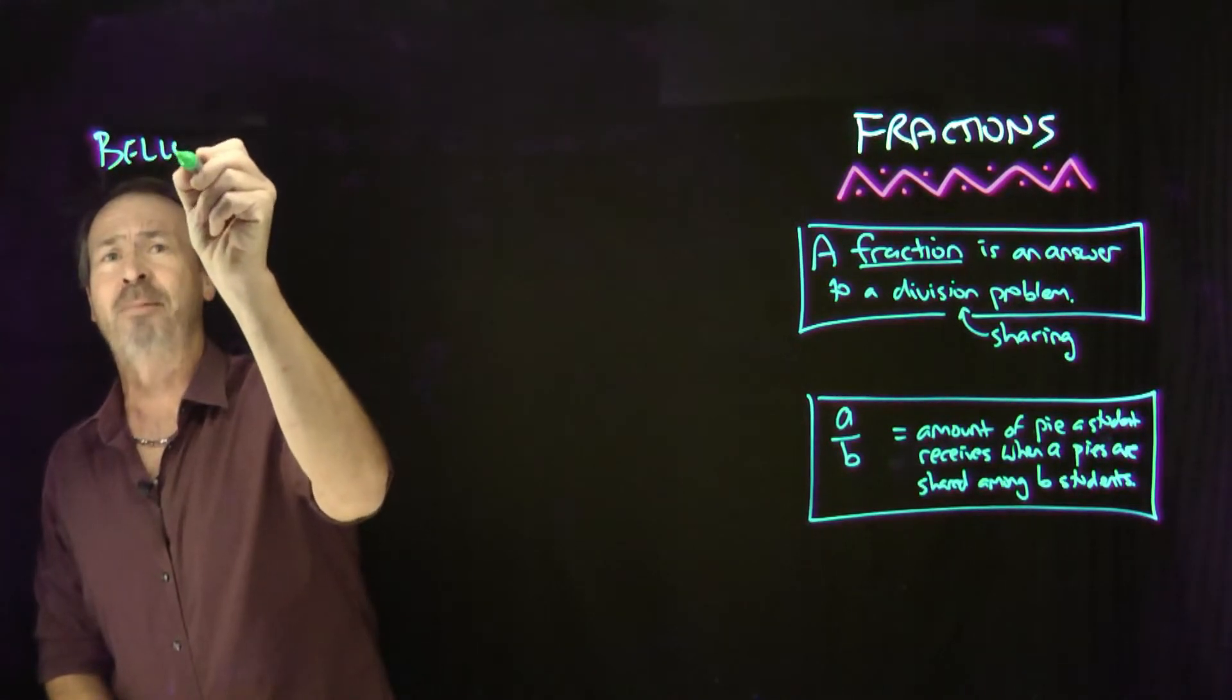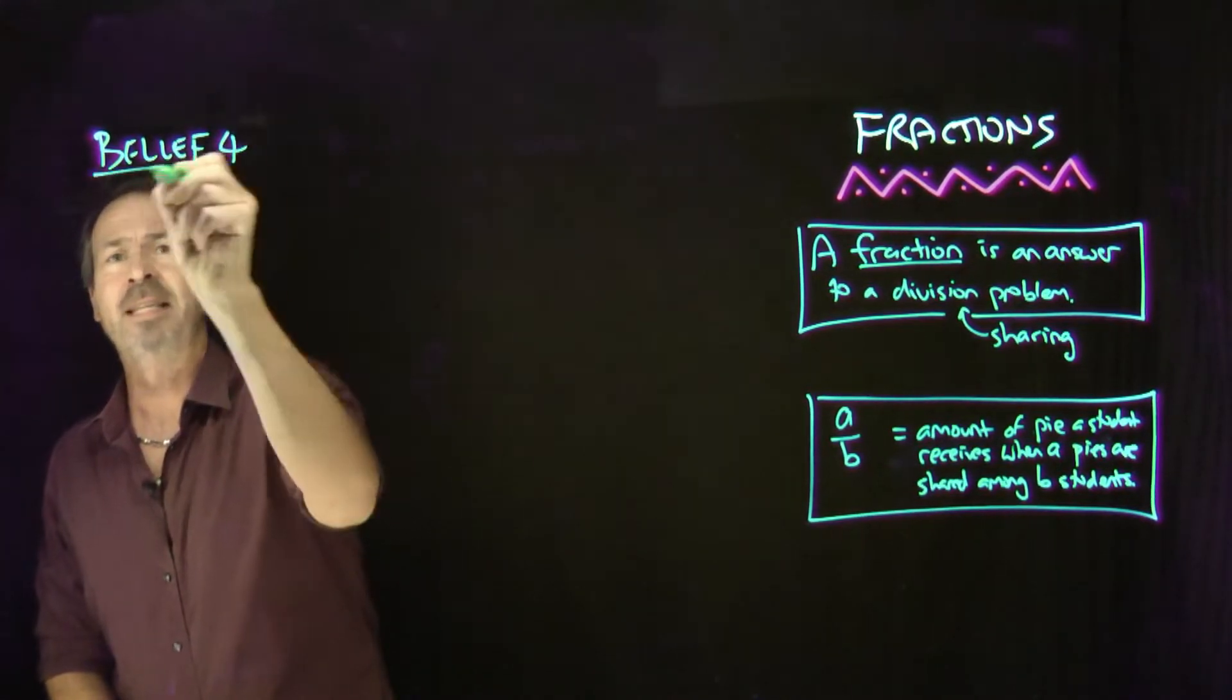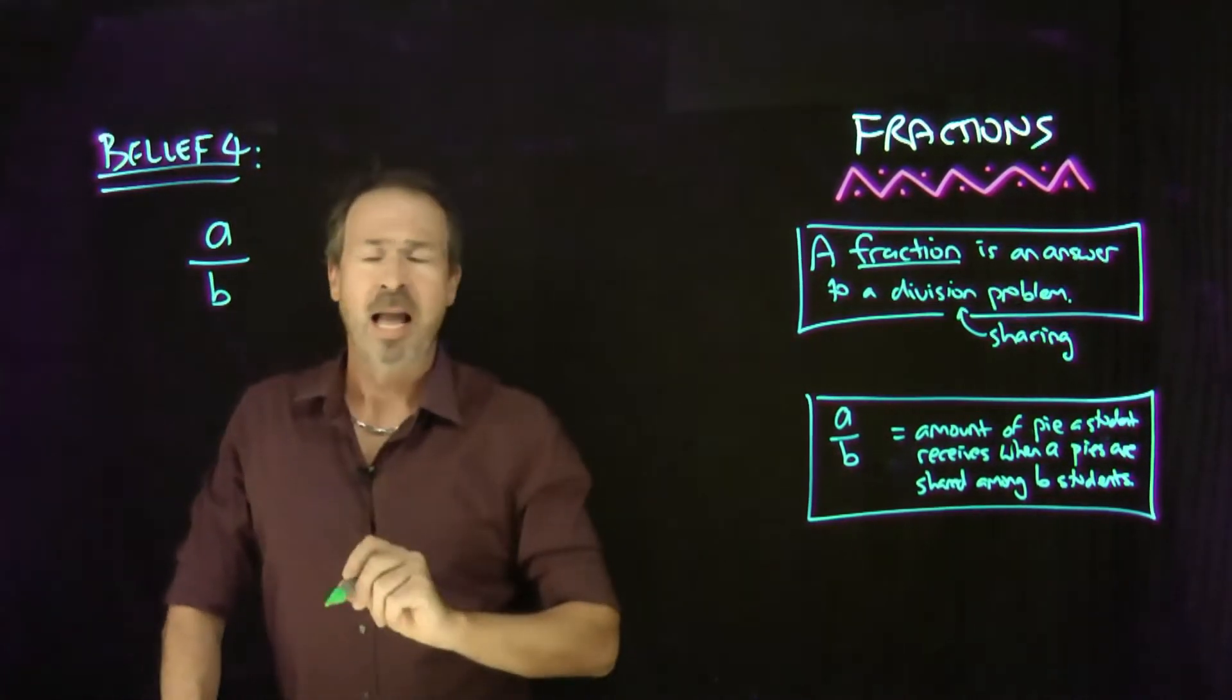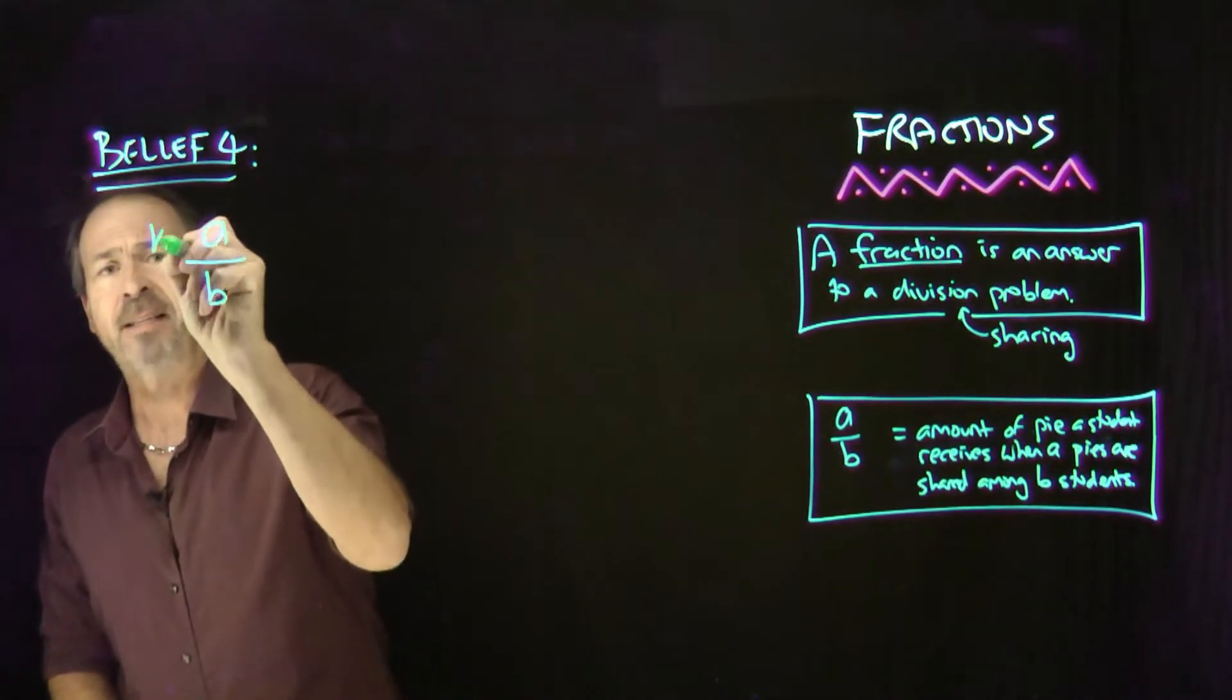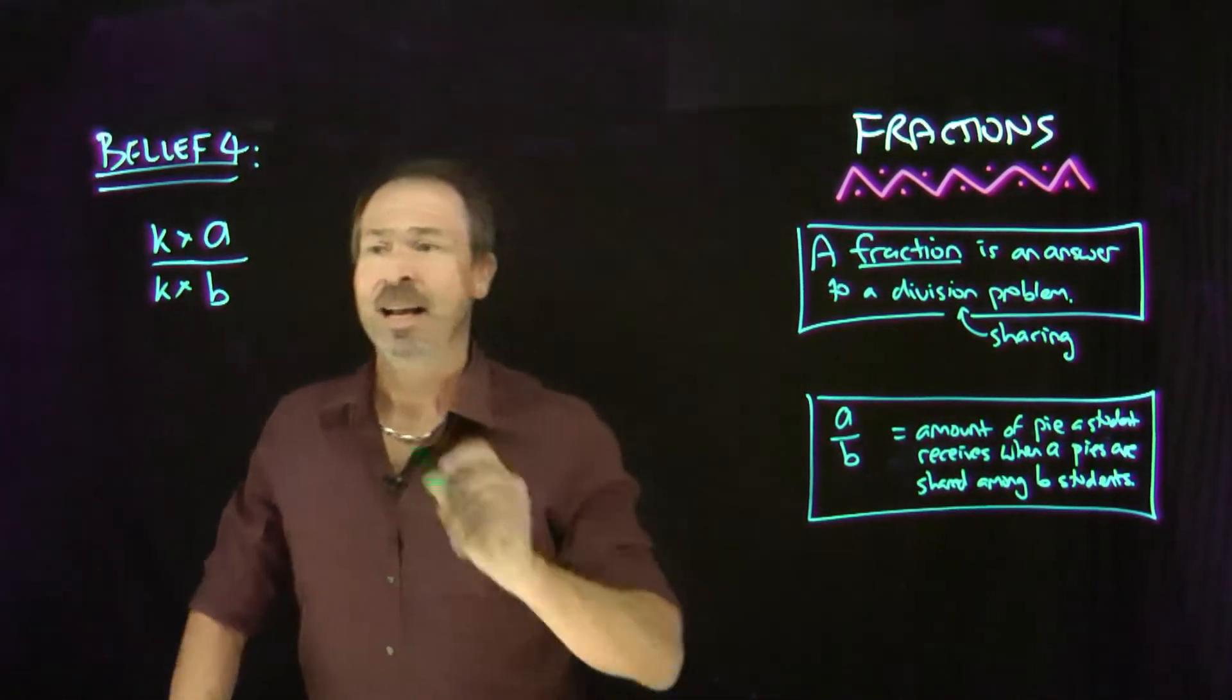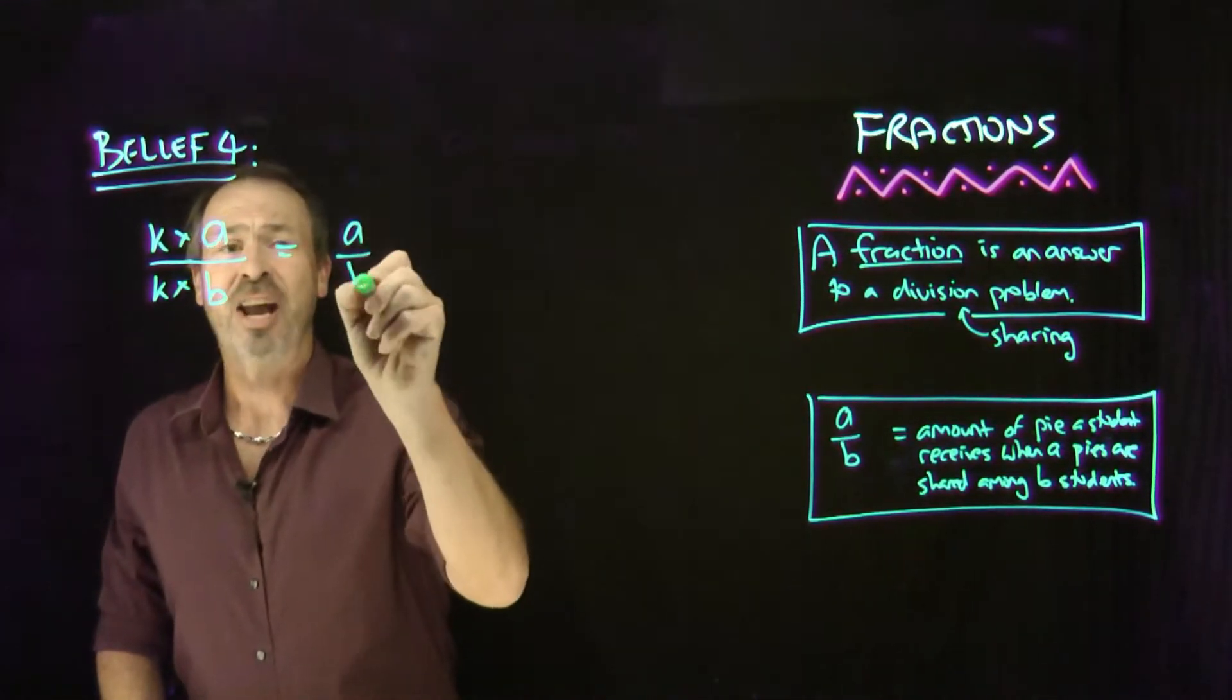Belief number four, let me write it properly. Belief number four is this: So I've got a pies for b students, and I scale the number of pies up by some factor k and scale the number of students also by the same factor k, then the result is nothing's changed. You have the same answer you had before.